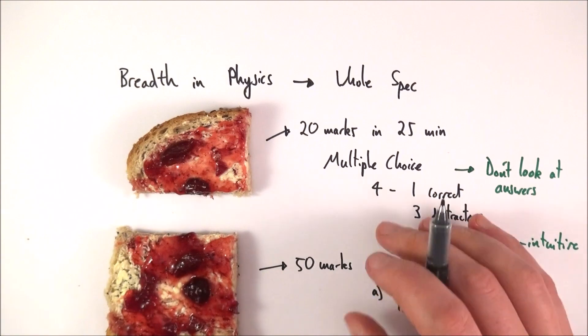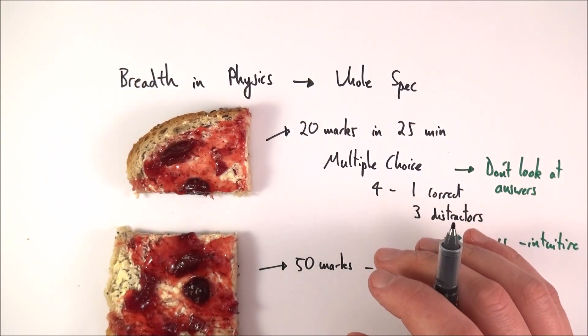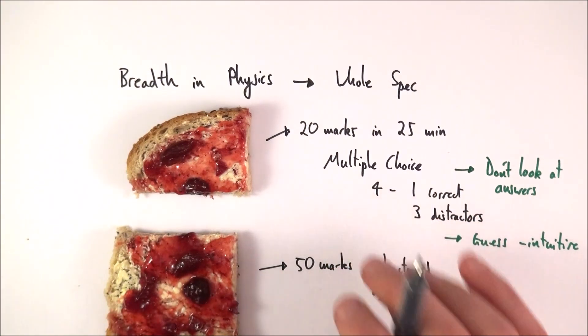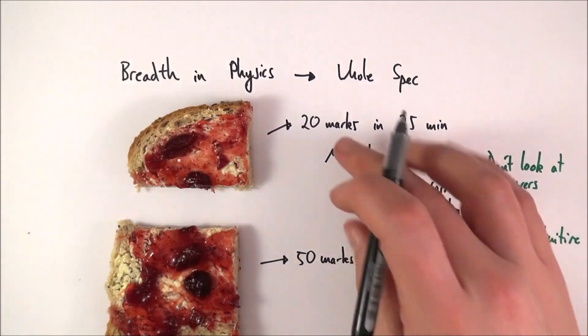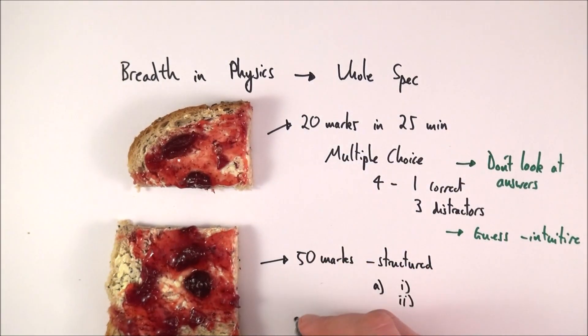Now this one here, again, it's just practice doing past papers, doing things like Isaac Physics to get better at this kind of thing. Basically you've got 70 marks in total and you've got 90 minutes to actually complete the paper.